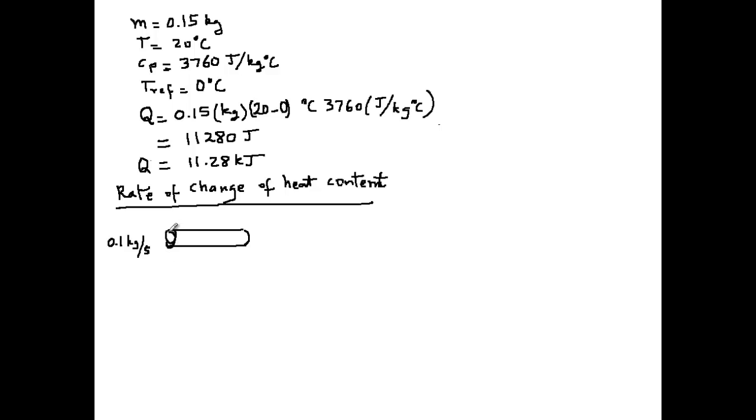Milk enters the pipe at 80 degrees C and it leaves the pipe at 60 degrees C. In other words, it cools as it flows through this section of the pipe. Note that this pipe is not insulated, so heat is transferred from the inside, from milk, through the pipe material, and into the surrounding environment. So, the equation to estimate the rate of change of heat content can be developed as follows.